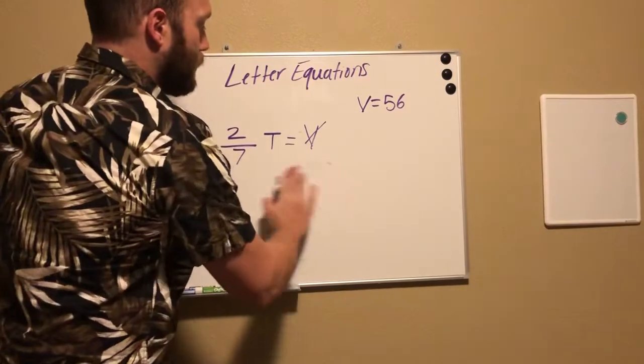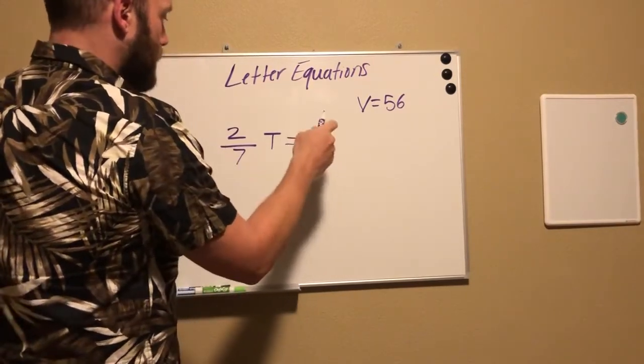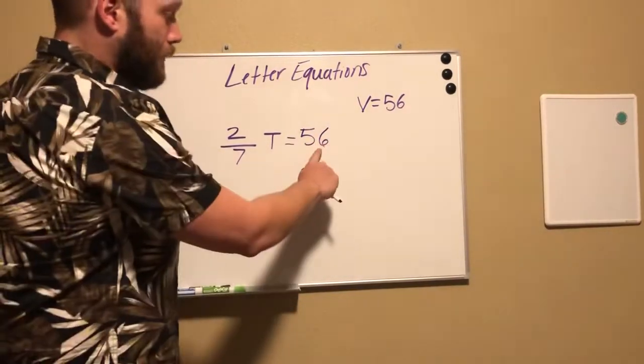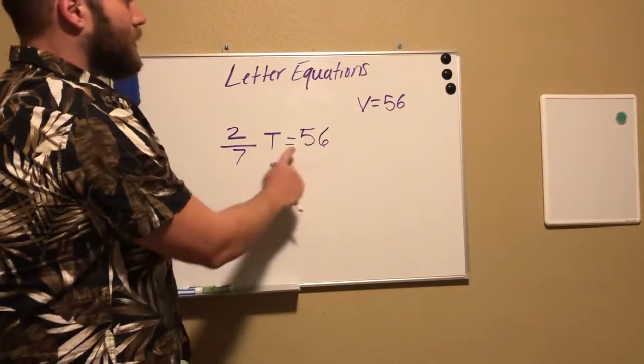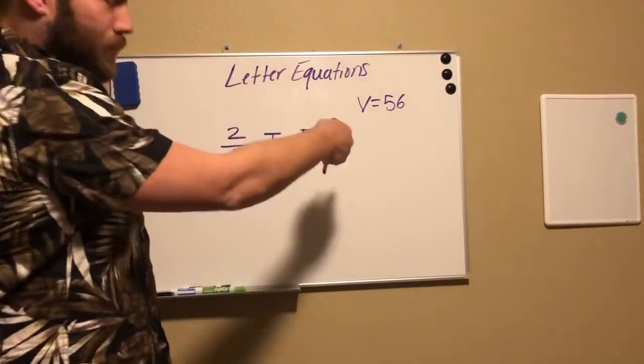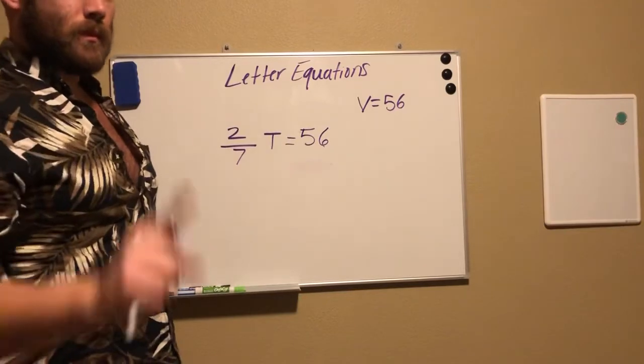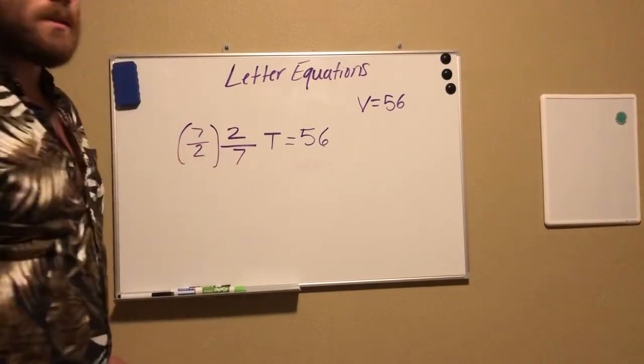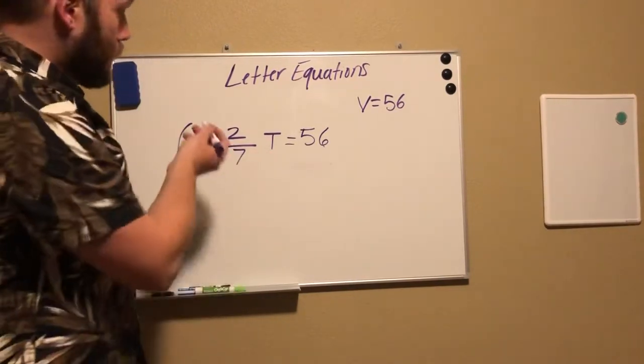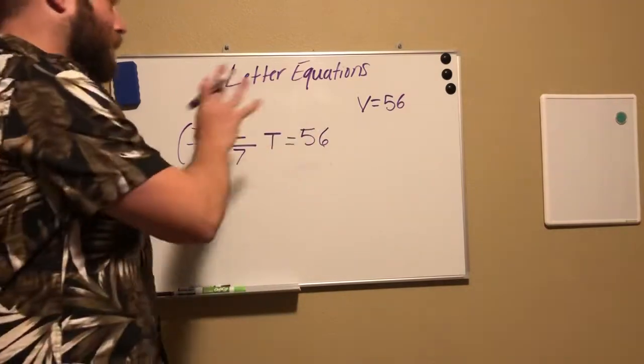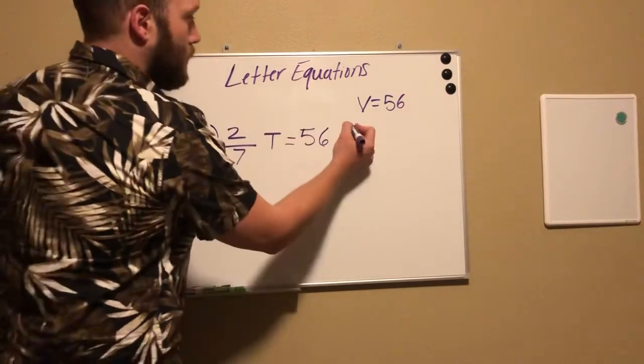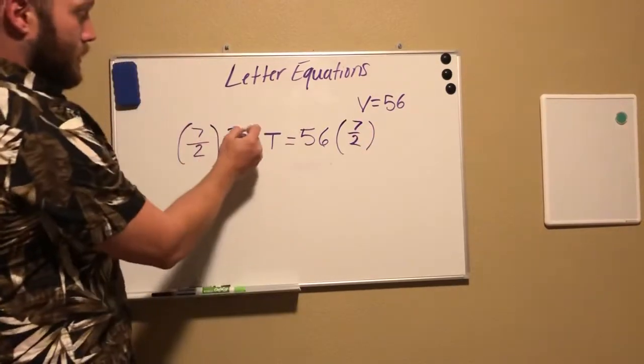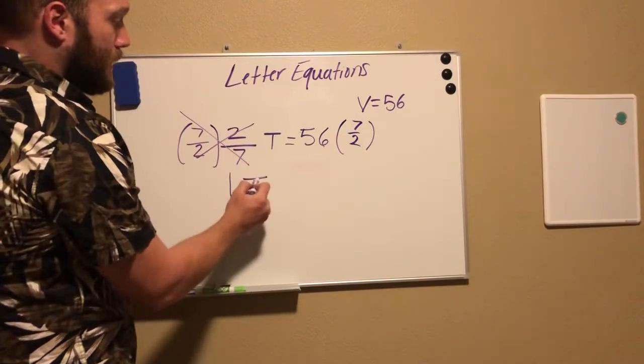Now what we want to do is get all the numbers on the same side of the equal sign. Right now we have 56 on this side of the equal sign and two-sevenths on this side of the equal sign. How would I get the two-sevenths over here? That's right, the reciprocal. So I need to multiply two-sevenths by its reciprocal, which is the fraction flipped. So we have seven-halves. And whatever I do to this side of the equation, I have to do to this side, so I have seven-halves over here as well.